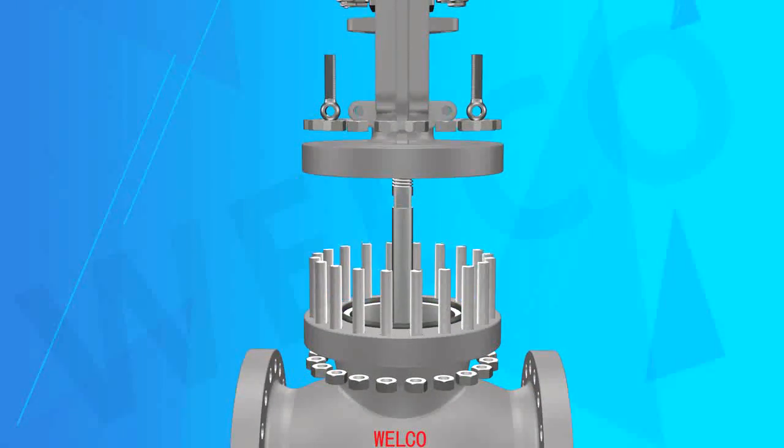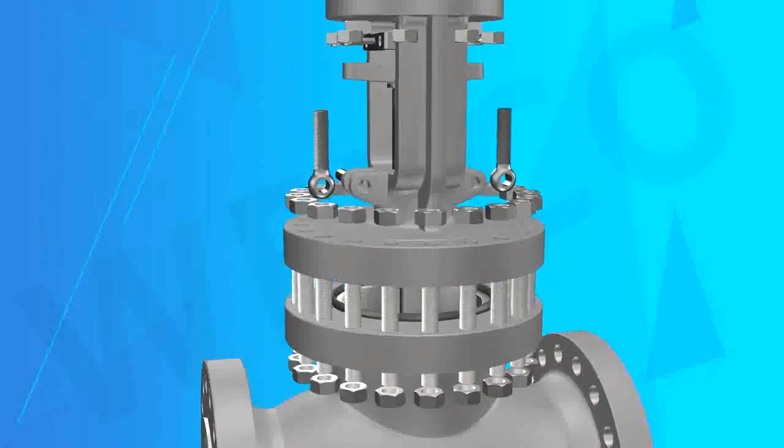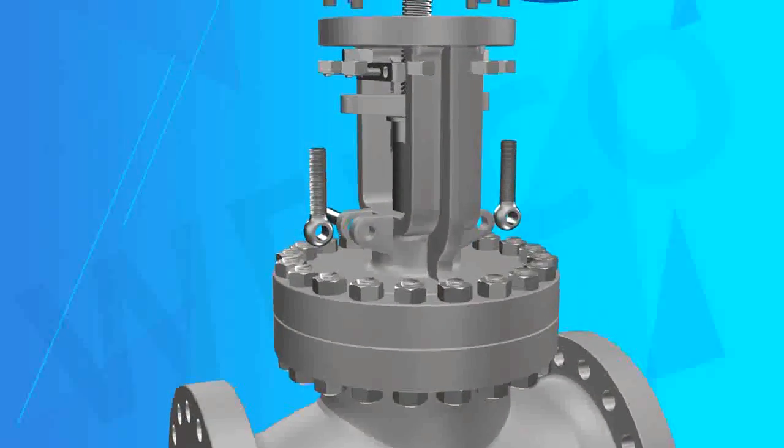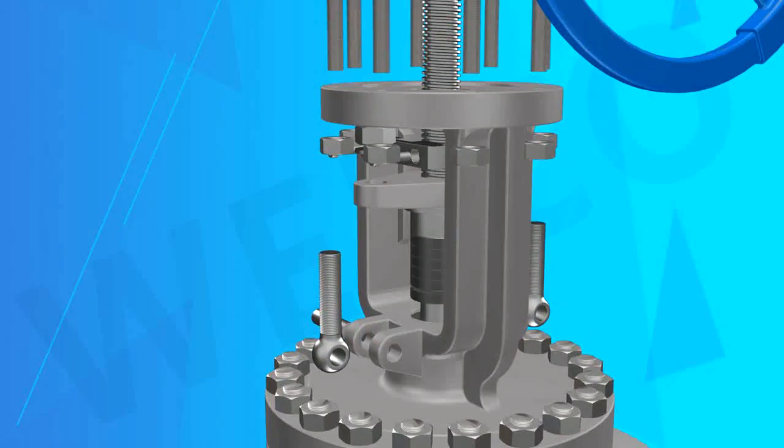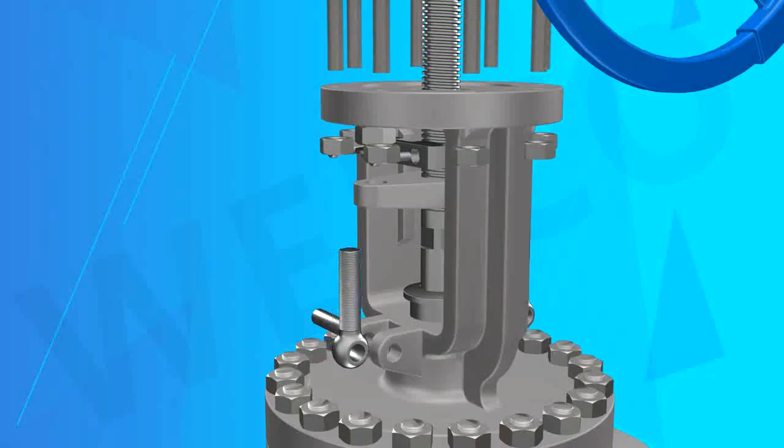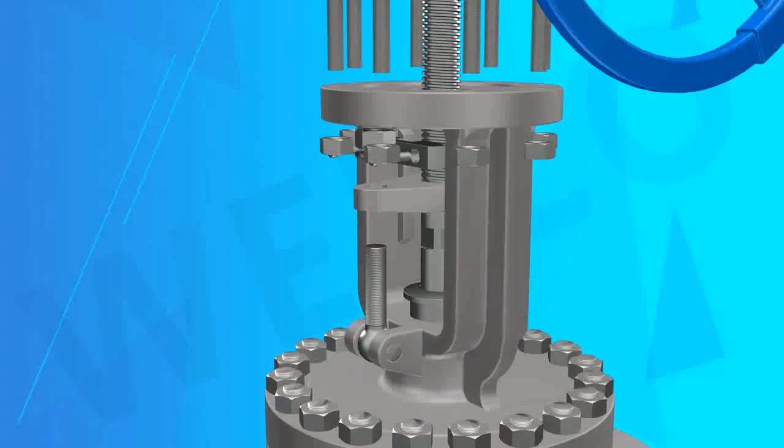2. Body and Bonnet Connection Form - Bolted Bonnet, Welded Bonnet, Pressure Sealed Bonnet. 3. Spring Loaded Packing Impact System - According to customer requirements, using spring-loaded packing impact system to improve the durability and reliability of packing seal.